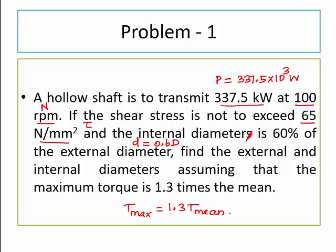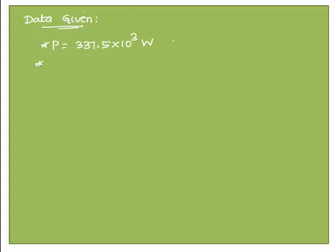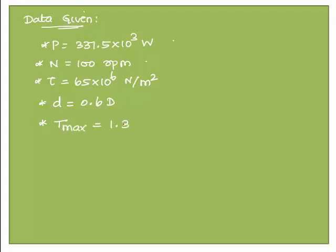These are all the data given in the problem. We write down: Power = 337.5 × 10³ watts; Speed = 100 rpm; Shear stress τ = 65 × 10⁶ newton per meter²; Internal diameter d = 0.6 × outer diameter D; Maximum torque T_max = 1.3 × T_mean. It is asked to find the external and internal diameters, small d and capital D.